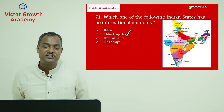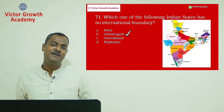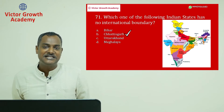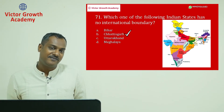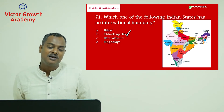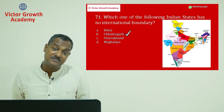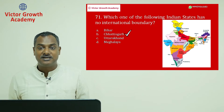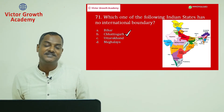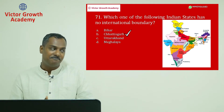Question number 71: which Indian state has no international boundary? This is one of the easiest map-based questions. Chhattisgarh is in the interior of India and cannot have any international border. Bihar has a border with Nepal, Uttarakhand borders Nepal and China, and Meghalaya borders Bangladesh. So Chhattisgarh has no international border. Question 71 answer is B.